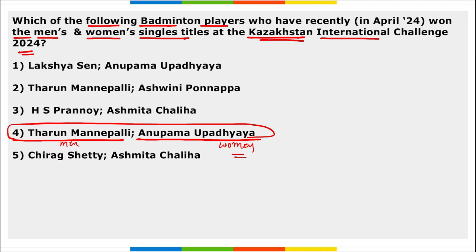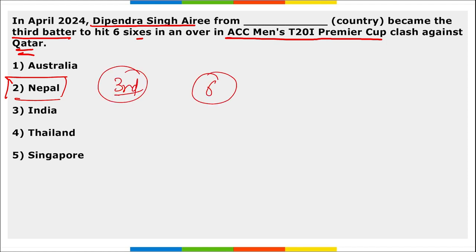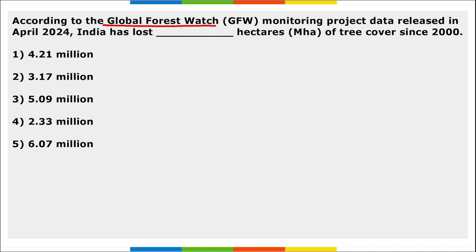Next: in April, Dipendra Singh Airee from Nepal became the third batsman to hit six sixes in an over, in the ECC Men's T20 International Premier Cup clash against Qatar. He joined Kieron Pollard and Yuvraj Singh — now the third person is Dipendra Singh Airee who has hit six sixes in a single over.